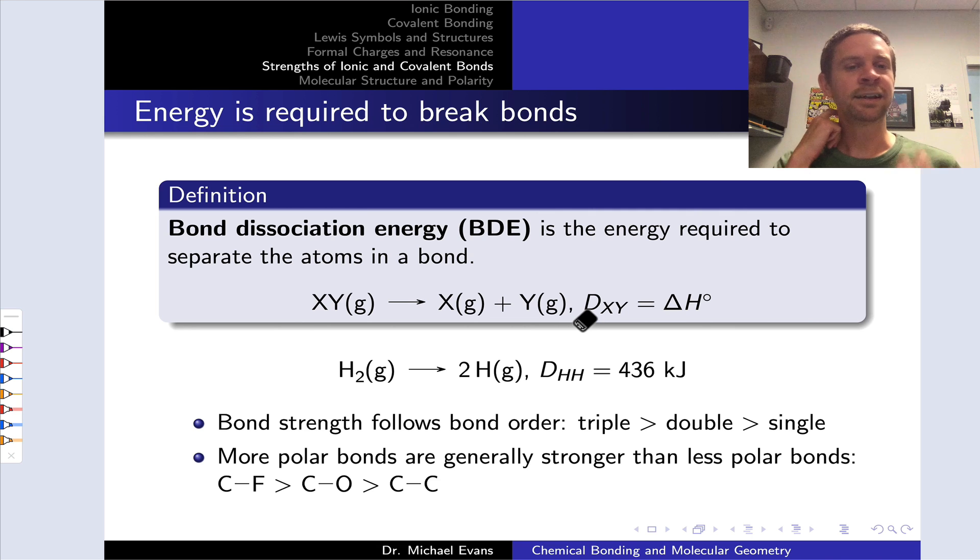So to begin, let's introduce the concept of bond dissociation energy. Bond dissociation energy is the energy required to separate the atoms in a bond in the gas phase. A chemical equation for the process is shown here. X and Y are bonded in the reactant molecule and are separated, separate gaseous atoms, on the product side.